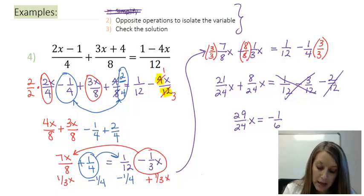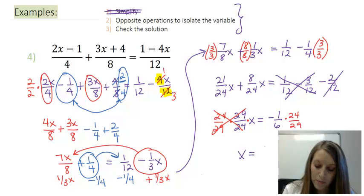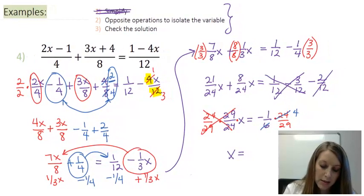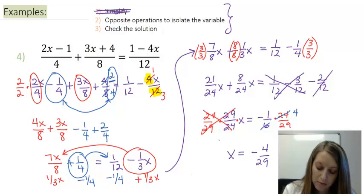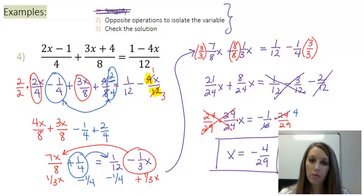Now my final step to isolate my variable is to divide by 29 over 24. Or we know it's the same thing as multiplying by the reciprocal. So I'm going to multiply by 24 over 29. Cancels everything else on the left except for my x variable. On the right, I reduce 24 divided by 6 gives me 4. And so that gives me my final answer of negative 4 over 29. So I have my final answer to this problem.